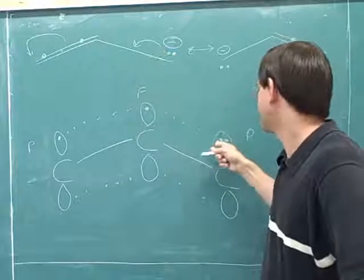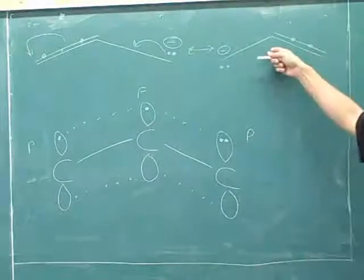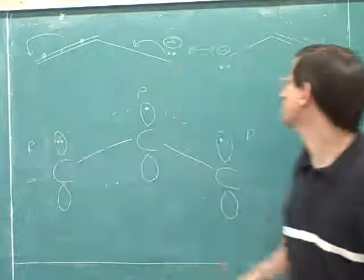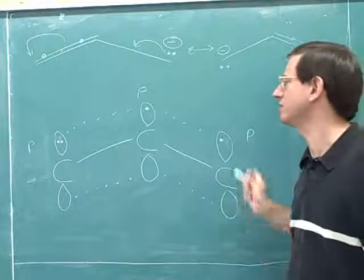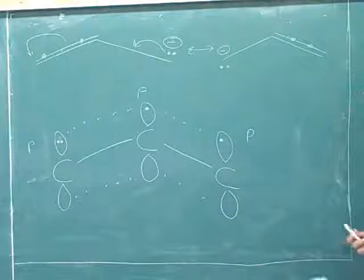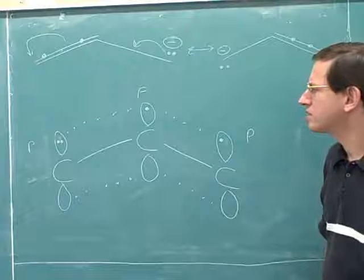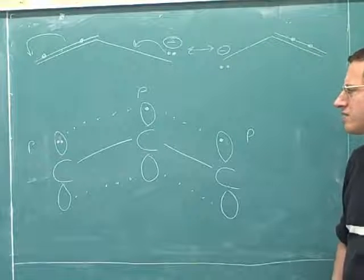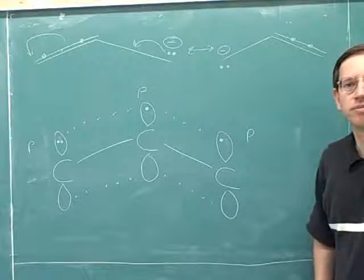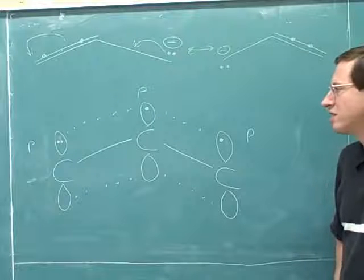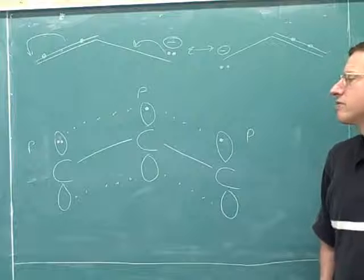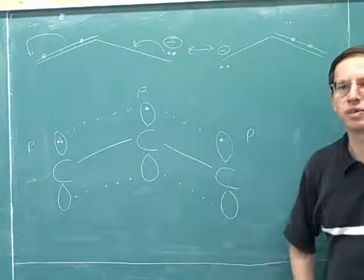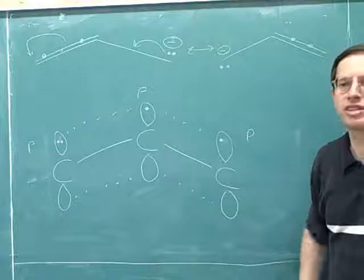These resonance forms show us that this lone pair really is delocalized among all the p orbitals. In this picture it looks like the lone pair is in this p orbital, but where is it really? It's not really in any one place — the electrons are really delocalized among all the p orbitals.